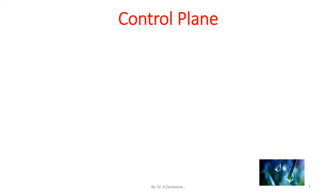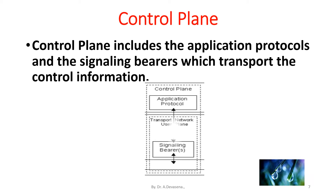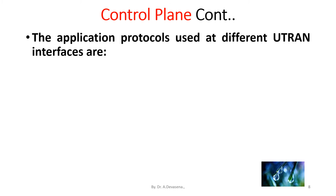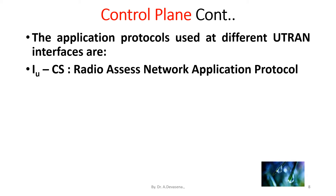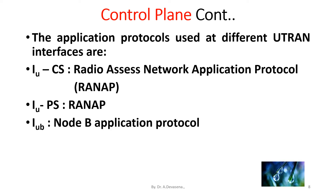The control plane includes the application protocols and the signaling bearers which transport the control information. The application protocols used at different U-tron interfaces are: IUCS — that is Radio Access Network Application Protocol (RANAP), IUPS — RANAP, and IUB — Node-B Application Protocol.